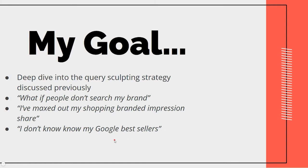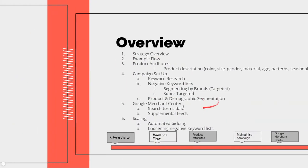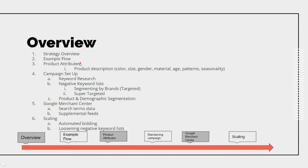I'm doing demographic and product segmentation to scale at a reasonable rate with this broad campaign, because it's not an on-or-off switch. You want to pick the best products, demographics, devices, and attributes based on historical data to be as profitable as possible. The general contents of this presentation will be the strategy overview, an example product flow, what product attributes are, the campaign setup, Google Merchant Center, and actual scaling.